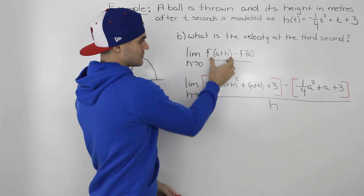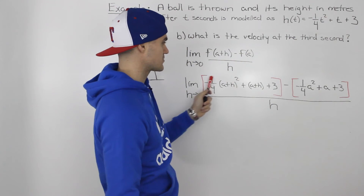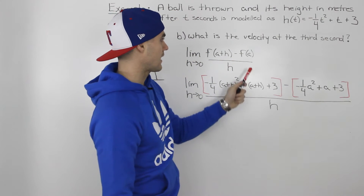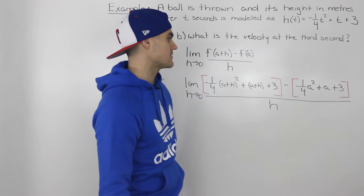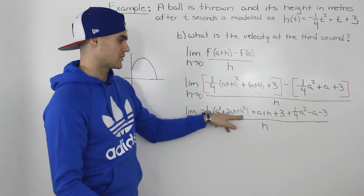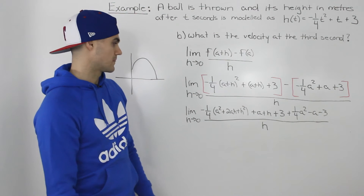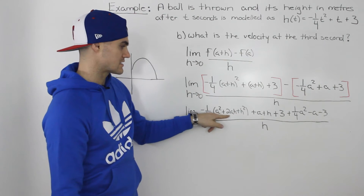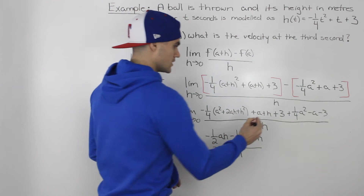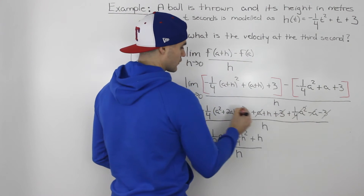Moving on with the difference quotient: f of a plus h is in the first square bracket, where I plugged a plus h in for all t values. Minus f of a is in the second square bracket, where I plugged in a for t, all over h. Simplifying the numerator, we foil out the a plus h squared term. Then we distribute the negative inside the second bracket. Next, we distribute the negative one over four inside the first bracket, and a bunch of things cancel: the threes cancel, the a's cancel, and the negative one over four a squared and positive one over four a squared cancel.